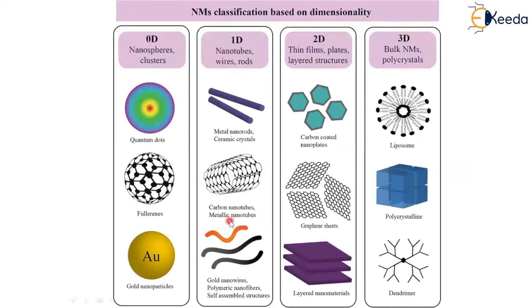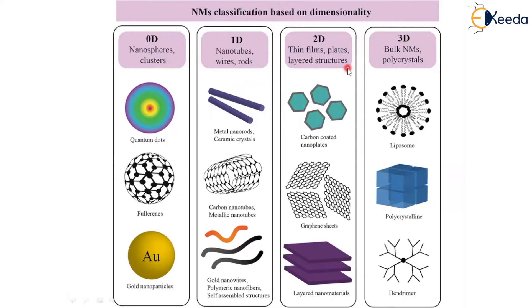In the one-dimensional case, examples include nanotubes, wires, and rods — specifically metal nanorods, ceramic crystals, carbon nanotubes, metallic nanotubes, gold nanowires, polymeric nanofibers, and self-assembled structures. In two dimensions, examples are thin films, 2D plates, and layered structures, such as carbon-coated nanoplates, graphene sheets, and layered nanomaterials. In three dimensions, examples include bulk nanomaterials like liposomes, polycrystals, and dendrimers.